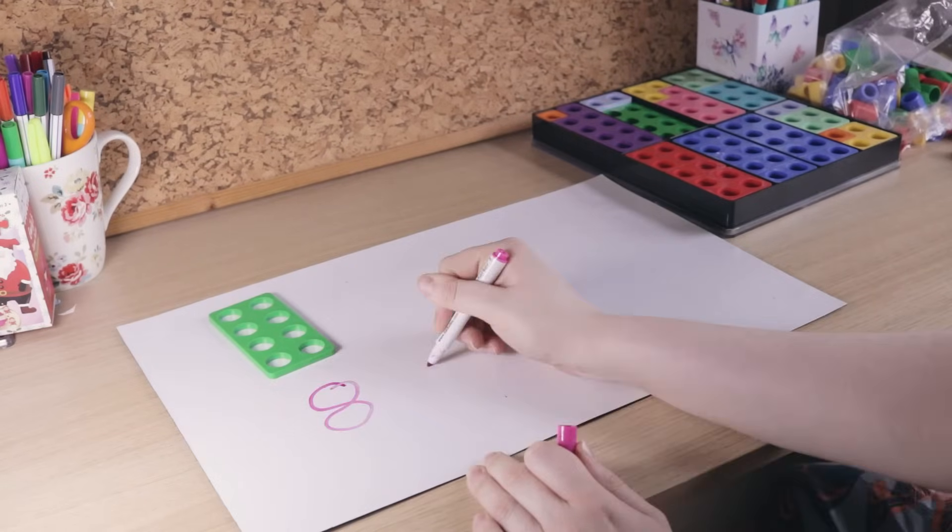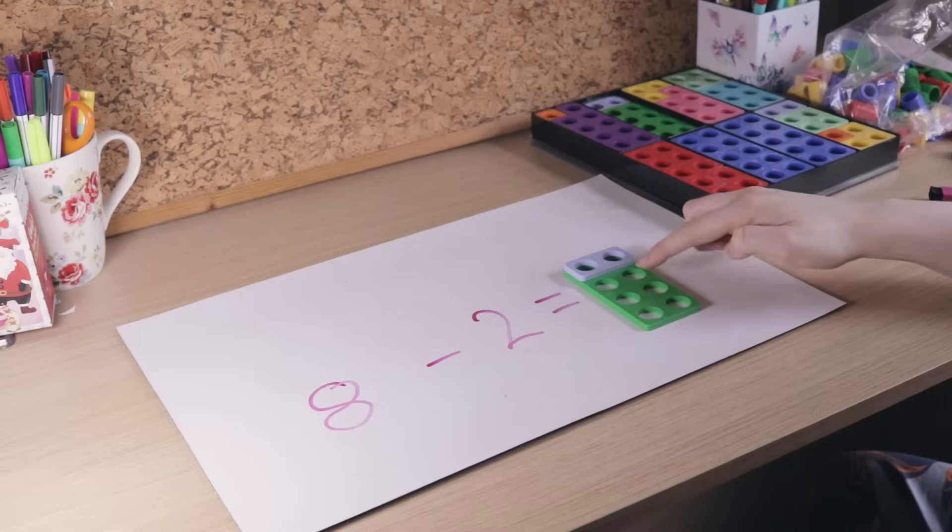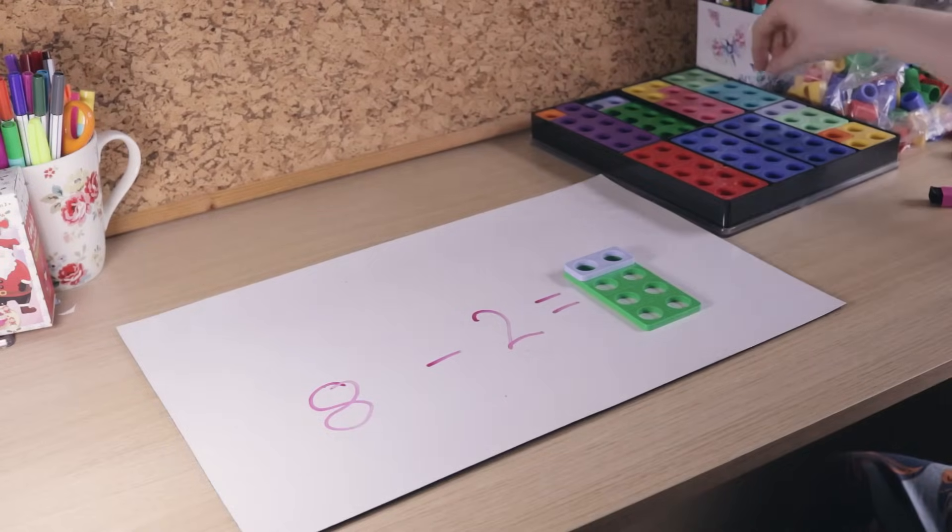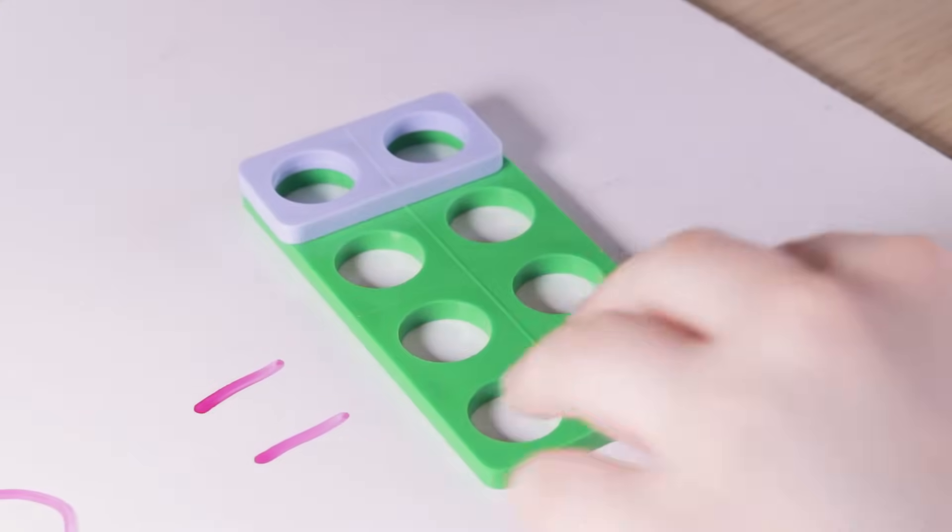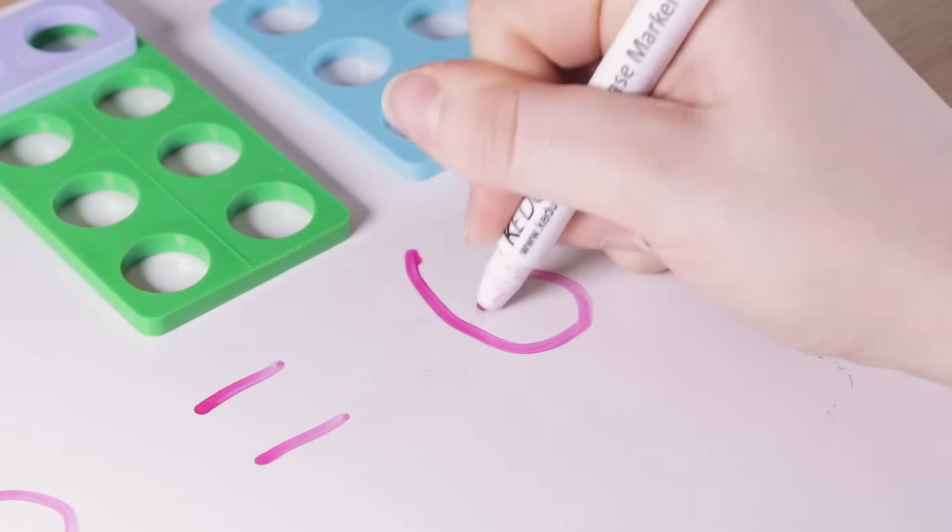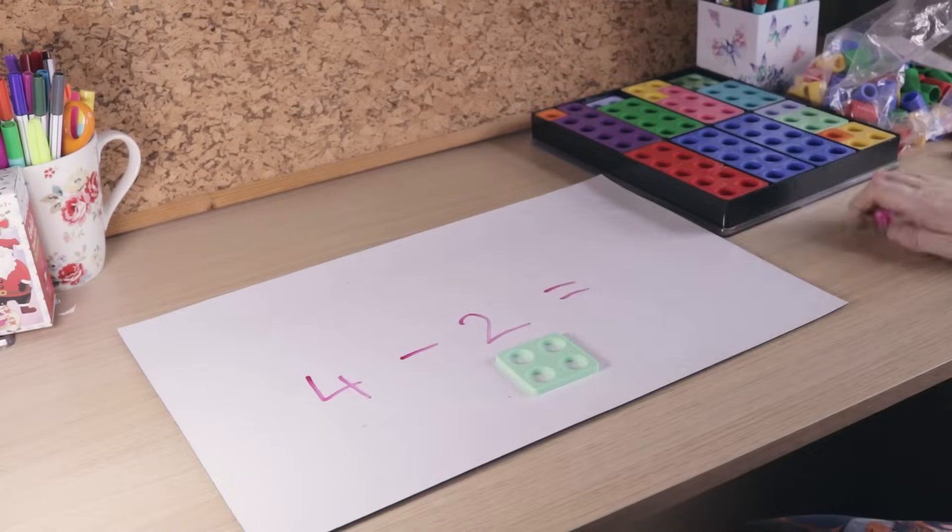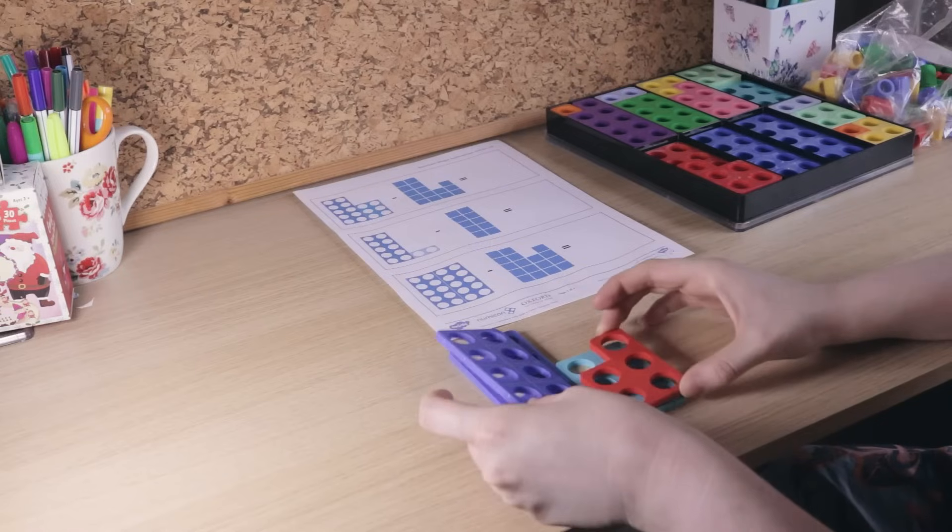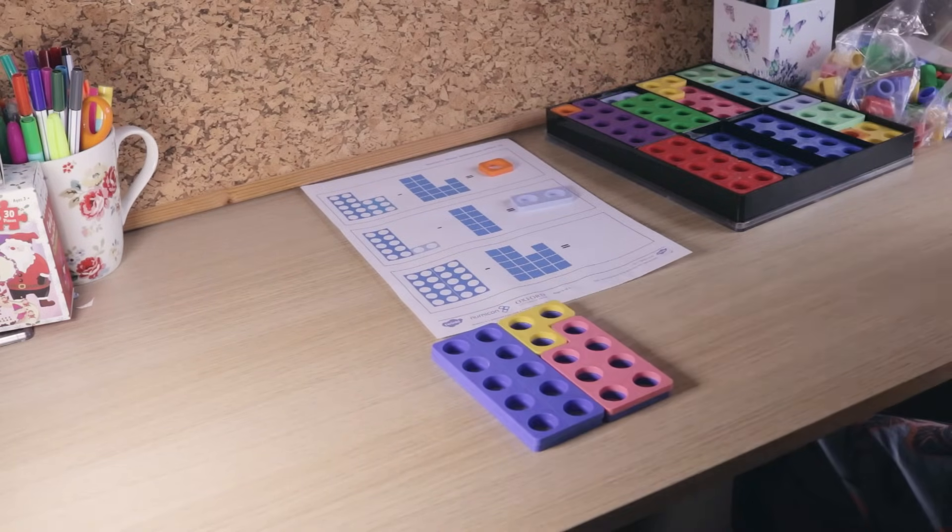For subtraction, we take the bigger number, for example 8, and place the smaller number on top. We can see the difference between the two shapes and we can see what shape matches that. If it makes it easier, children could cover the area with their hands to see the shape that is left over. This could be completed up to ten or higher depending on the level of the children.